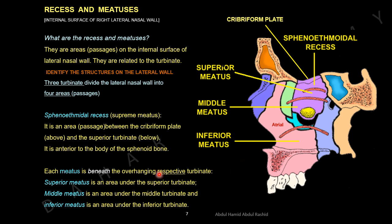Next we talk about the meatuses. The superior meatus is underneath the superior turbinate. The middle meatus is under the middle turbinate. The inferior meatus is under the inferior turbinate.